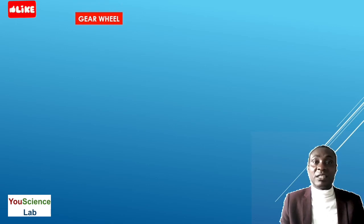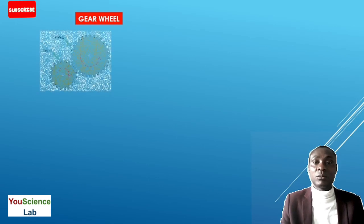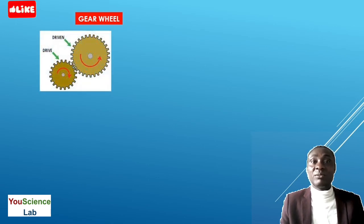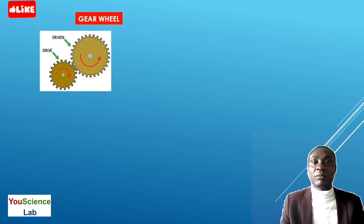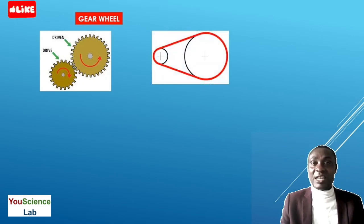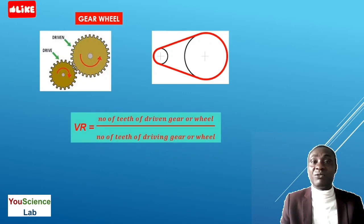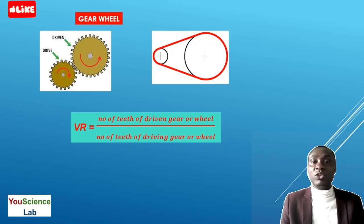An extension of the wheel and axle is the gear and wheel. Here we have a diagram of two gears that are meshing — the driver gear and the driven gear — and also a belt and pulley drive. They work similarly. The velocity ratio is defined as the number of teeth of the driven gear divided by the number of teeth of the driver gear.